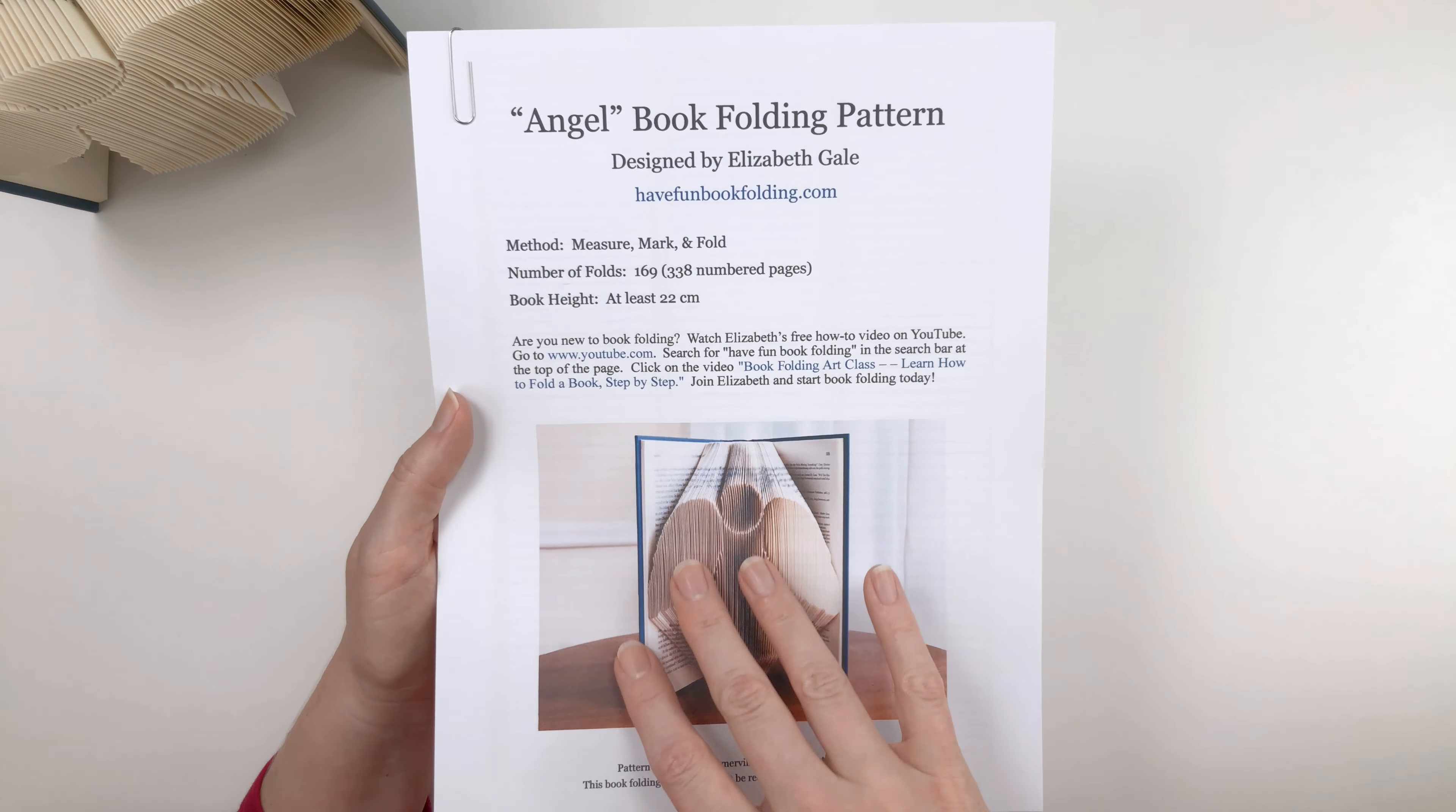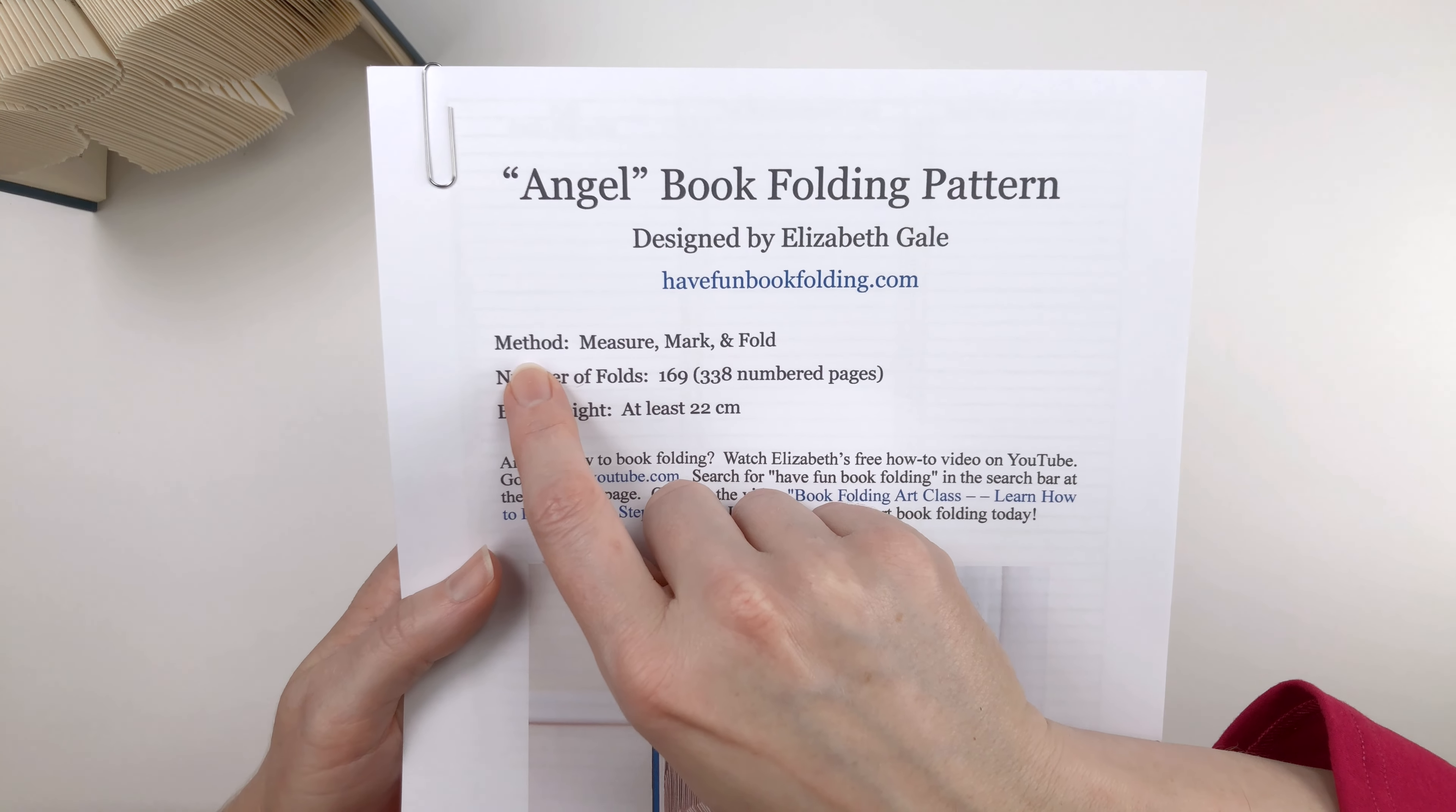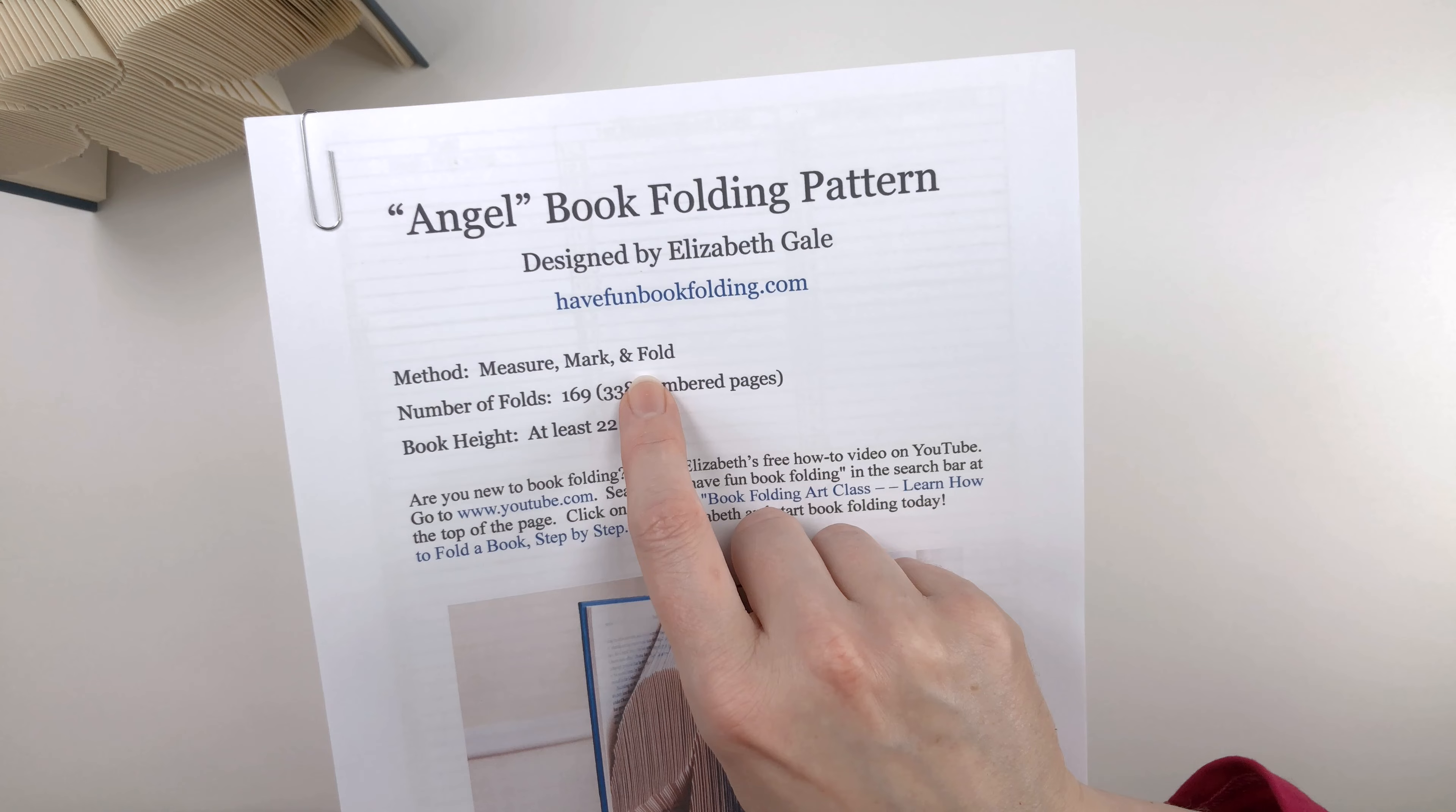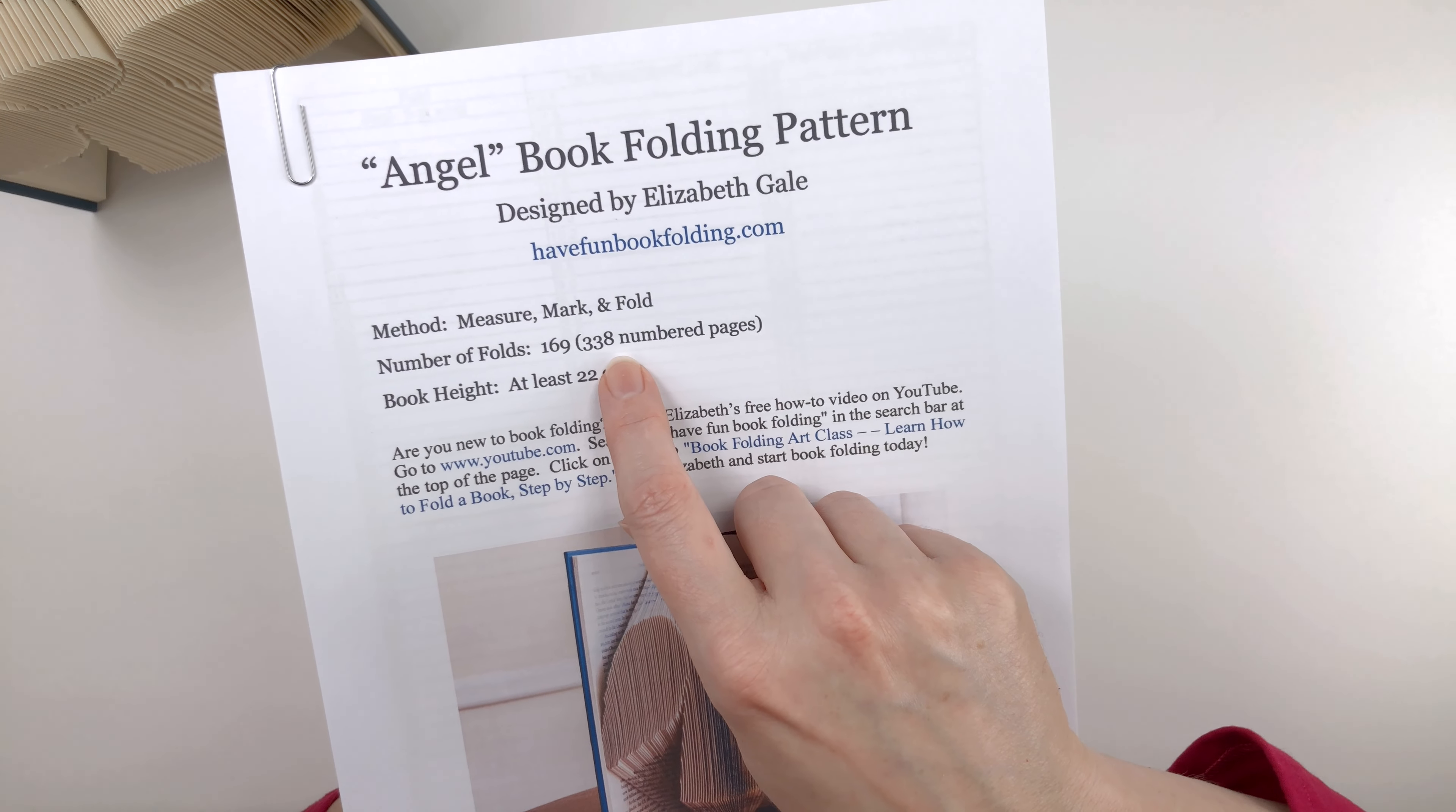This cover page gives you specific information about the project. If you look right here, you'll see the method we'll be using is the traditional measure, mark, and fold method. There's no cutting required, only folding. Next, you'll see the number of folds is 169, which equals 338 numbered pages.